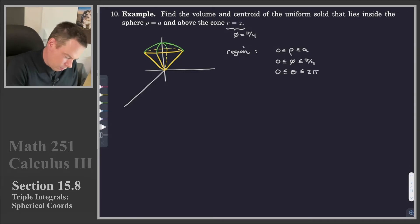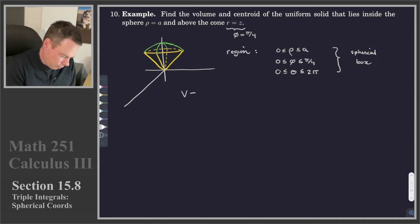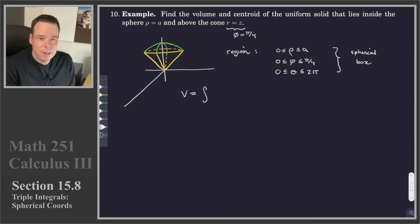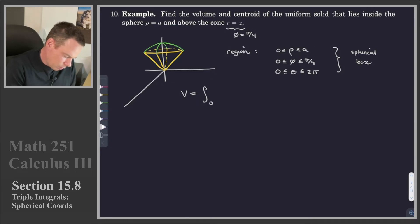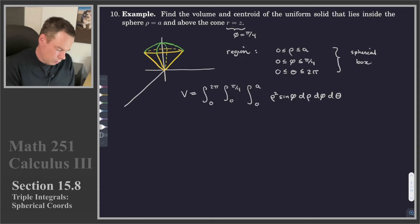This region is a spherical box. The integral representing the volume is just the integral over that spherical box, and we can integrate in any order because we have constants for every limit. So we go 0 to 2π for the theta integral, 0 to π/4 for the phi integral, 0 to a for the rho integral, and dV in spherical coordinates is ρ² sinφ dρ dφ dθ.